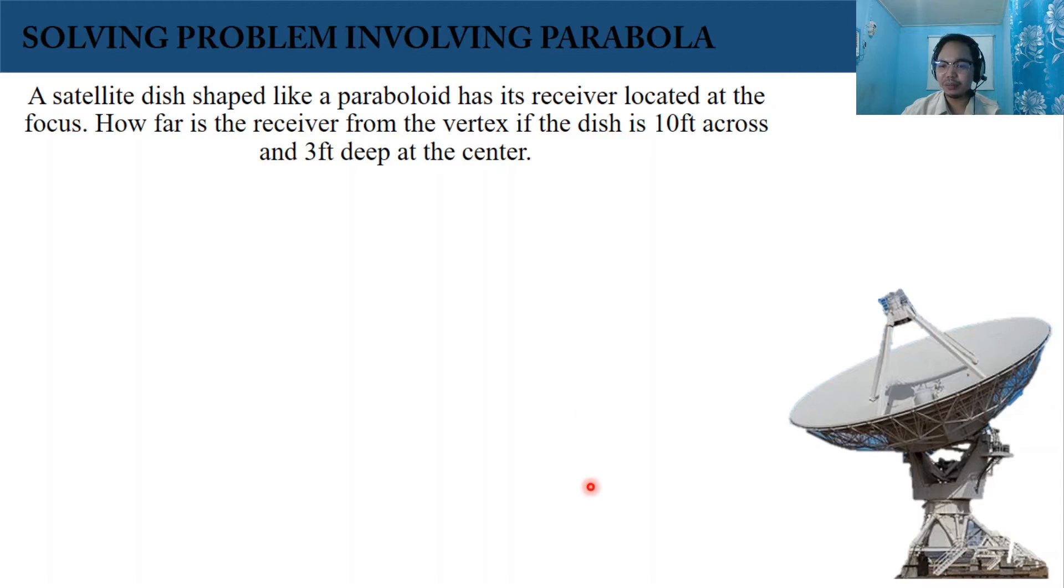As you can see in the bottom right corner of our screen, you can see the satellite dish shaped like a paraboloid. This is 10 feet across, or the mouth of our satellite dish is 10 feet across. The receiver is found somewhere out here because that is the focus of the parabola.